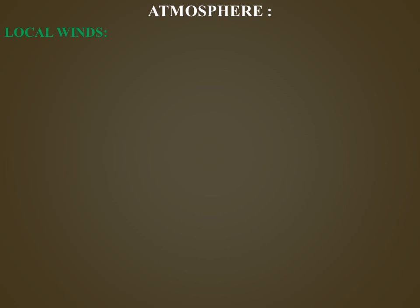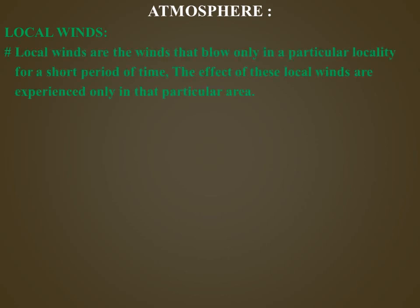Next we are going to learn about local winds. Local winds are winds that blow only in a particular locality for a short period of time, and their effects are experienced only in that particular area. They are mostly seasonal and have local names such as Chinook in the Rockies and North America, Fohn in the Alps, Sirocco on the north coast of Africa, Loo in the Thar Desert in India, Mistral in the Mediterranean Sea in France, and Bora in the Mediterranean Sea in Italy.